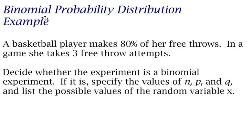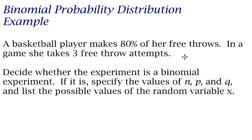Here we're looking at an example of a binomial probability distribution. There are four conditions that have to be satisfied for a binomial experiment. The first one is that there are a fixed number of trials. The second is that for each trial there are two possible outcomes, a success or a failure. The third is that the probability of a success is the same for every trial. And the last one is that the random variable X counts the number of successful trials.